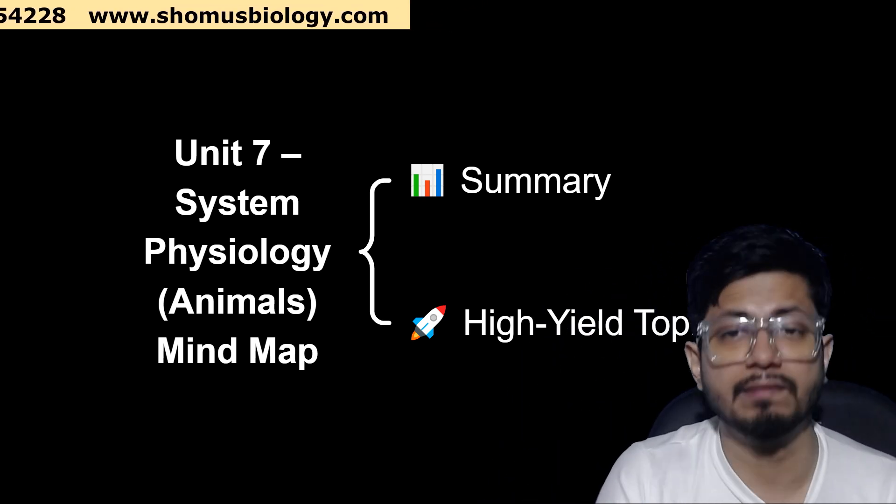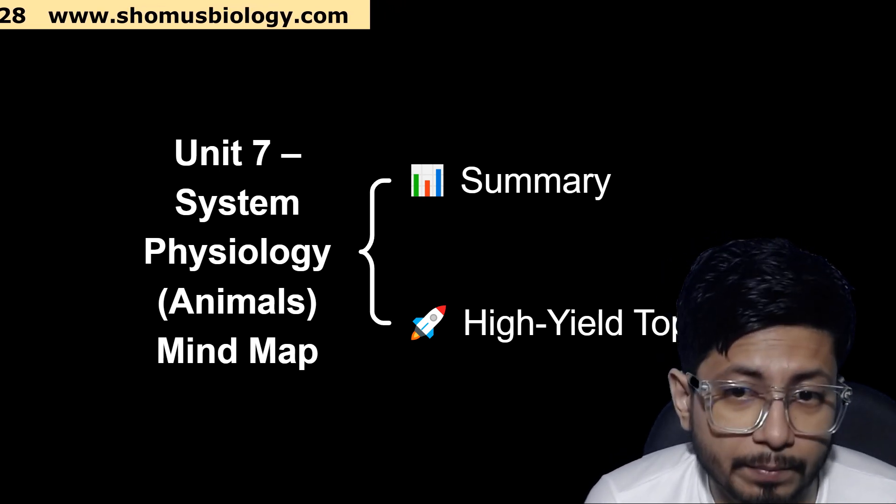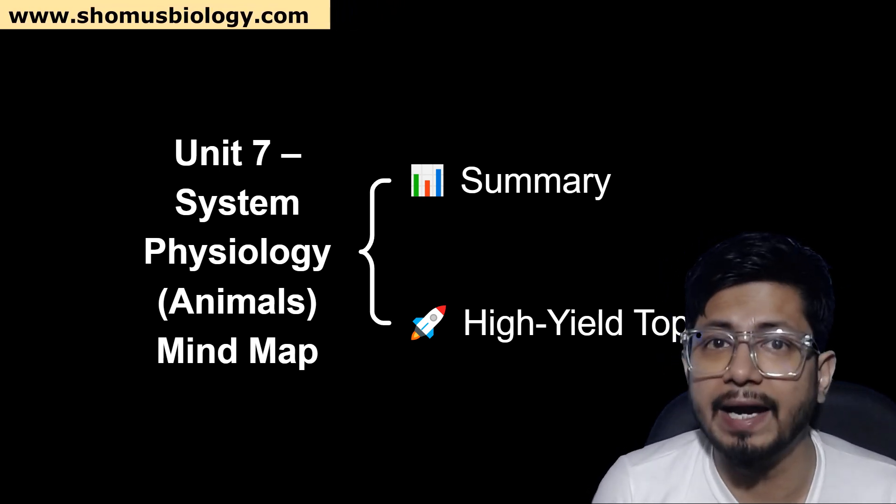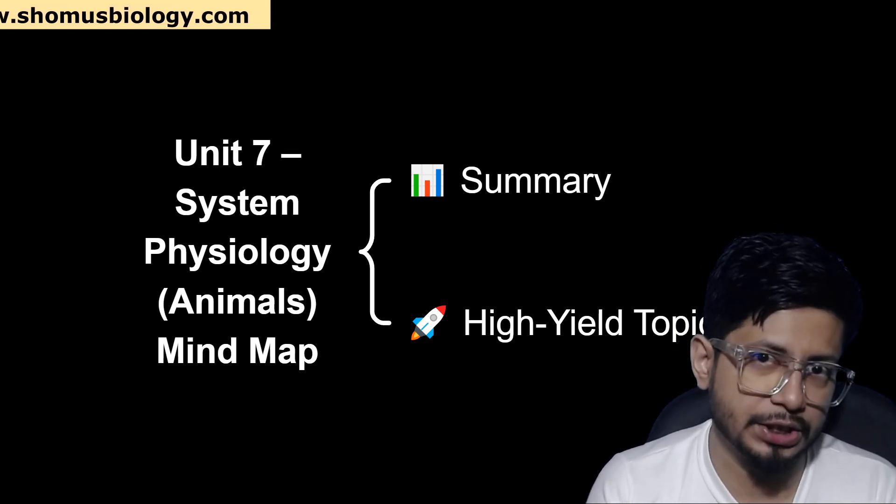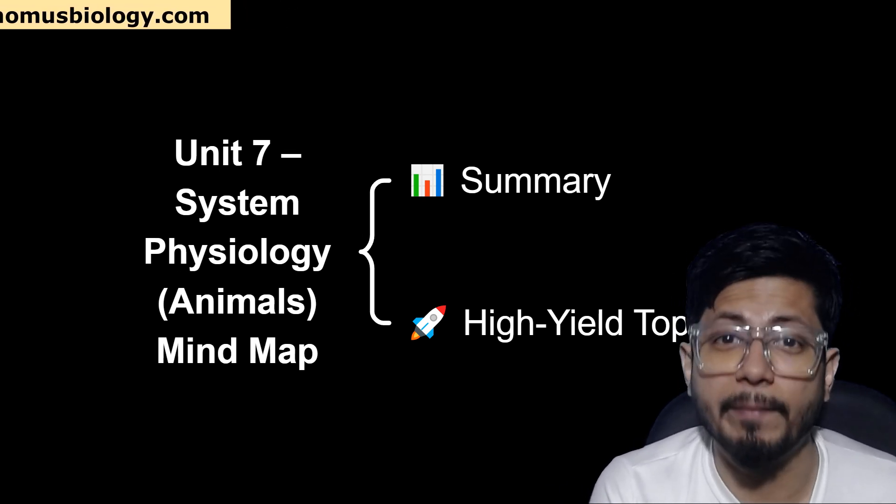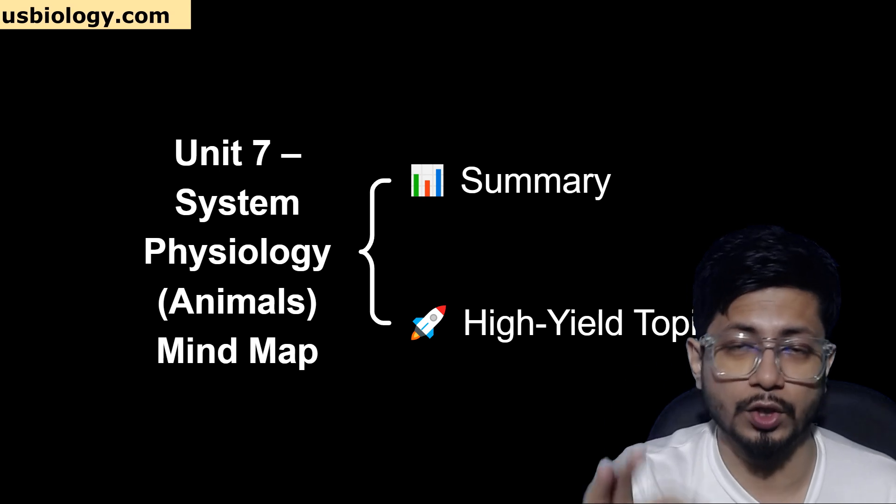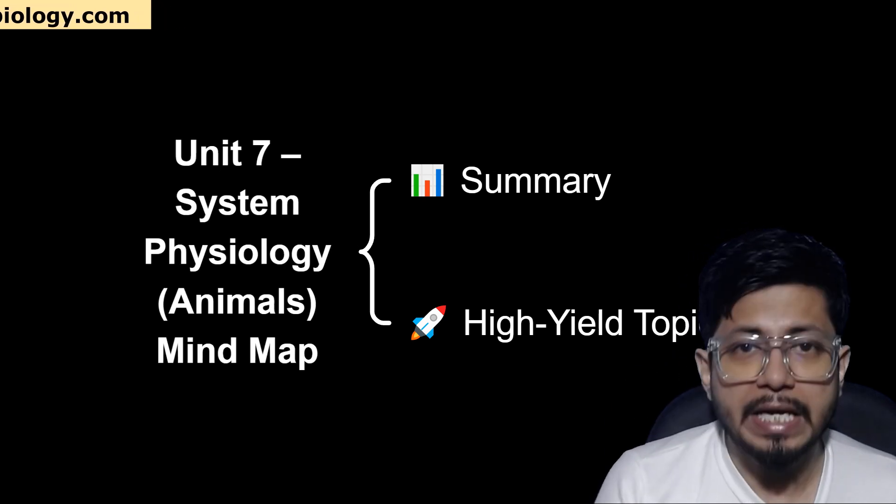So that concludes our understanding of all the important topics with the frequency of asking in the past few CSIR NET exam question papers. These are the high topics that you can prepare for the upcoming examination as well. So that's the heat map analysis for human physiology or animal physiology for you. If you like this video, please hit the like button, share this video to your friends and colleagues. Subscribe to get more videos like that in future.